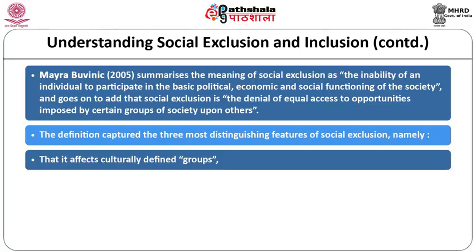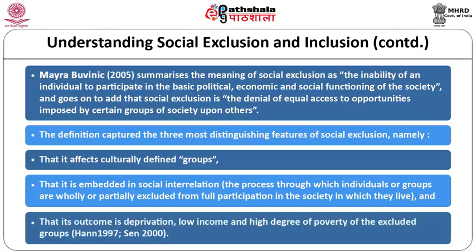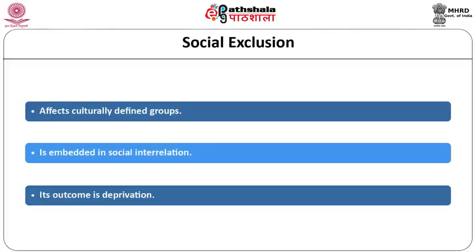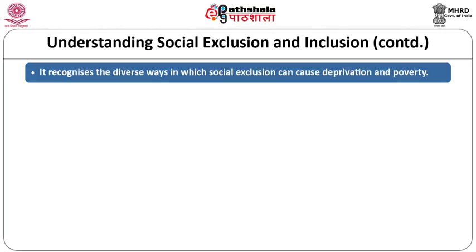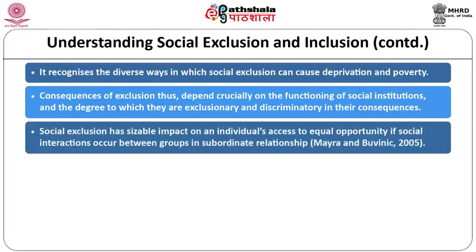Myra Buvnik summarizes social exclusion as the inability of an individual to participate in basic political, economic and social functioning of society, and the denial of equal access to opportunities imposed by certain groups upon others. The definition captures three distinguishing features: it affects culturally defined groups; it is embedded in social interrelations; and its outcome is deprivation, low income and high poverty. Consequences of exclusion depend crucially on the functioning of social institutions and the degree to which they are exclusionary and discriminatory.